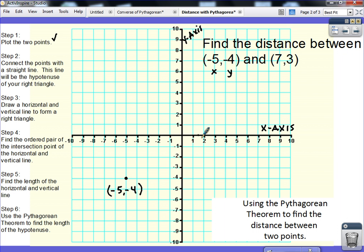My second ordered pair is (7, 3), my x value is 7, so I'm going to move to the right 7, my y value is 3, I'm going to move up 3, and that is where the point (7, 3) is located.